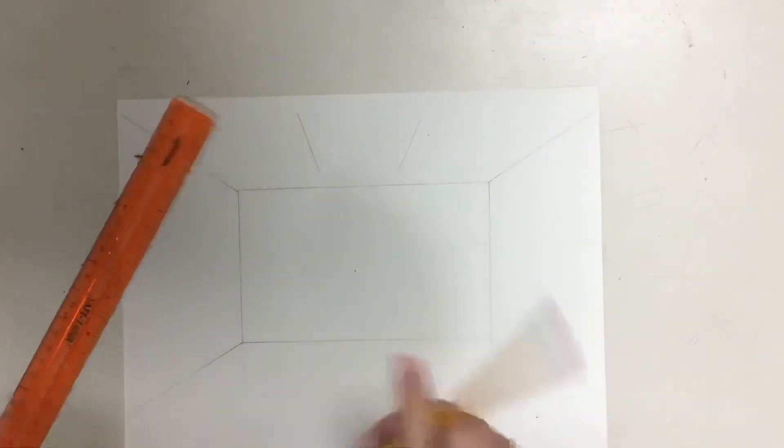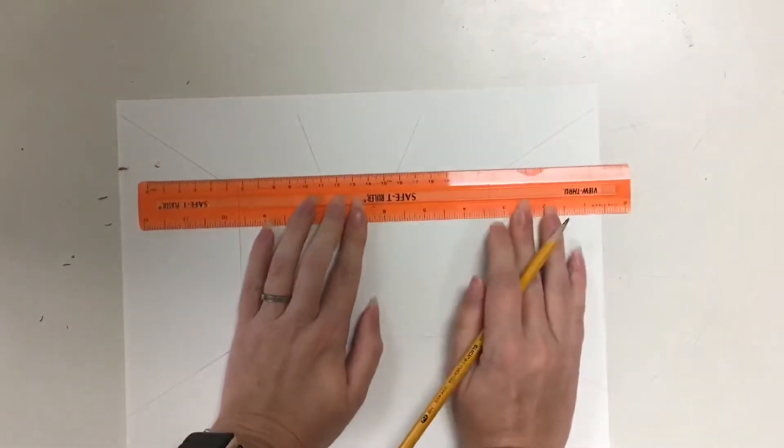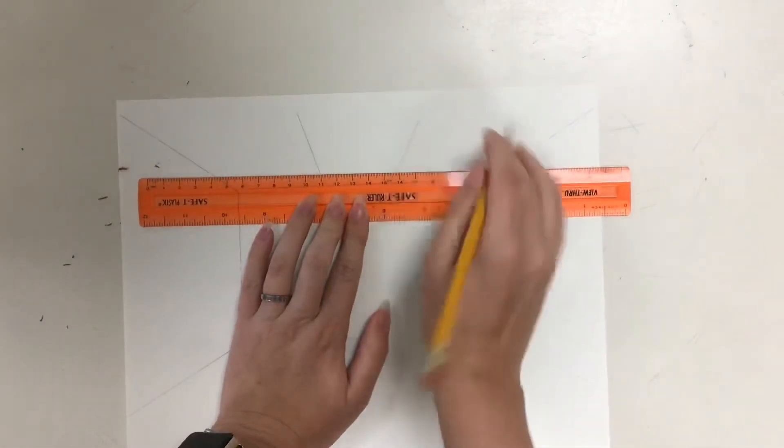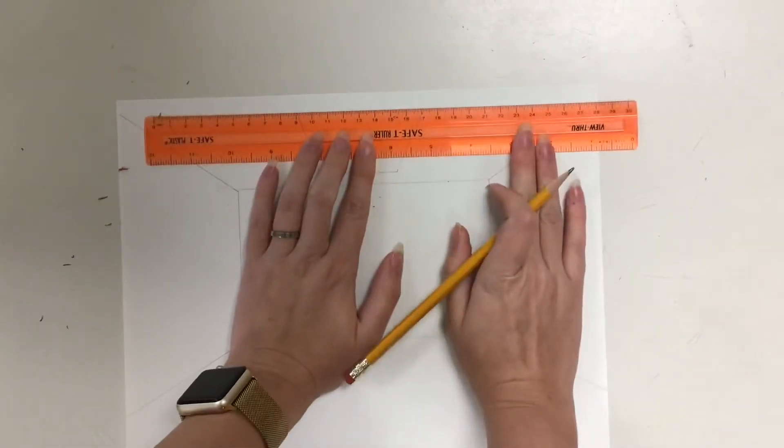Okay, so something like that. And this, if you were looking at it, if you were laying on the floor looking up, this would be a perfect rectangle. Because it's in one point perspective, it is a trapezoid.